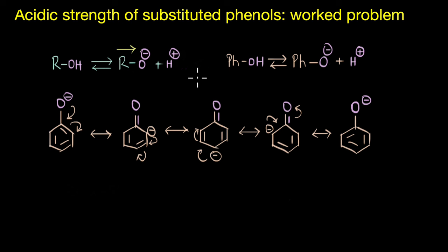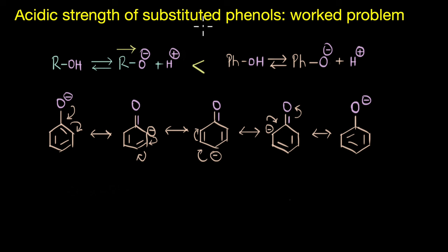So that is something that we already know — that phenols are more acidic than alcohols. Let's now go one step further and look at the effects of substituents on the acidic strength of phenols. How does the acidic strength vary if we have an electron donating or an electron withdrawing group attached to our benzene ring?